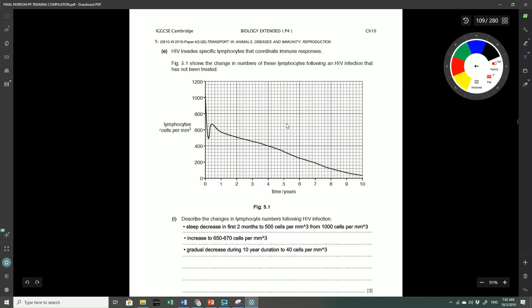All we're going to do is describe each of these with the relevant quotes from the graph. There's a steep decrease in the first two months from 1,000 cells per millimetre cubed to around 500 cells per millimetre cubed, and that happens over the period of two months. Then you can say that there is an increase from that 500 cells per millimetre cubed to around 650 to 670 cells per millimetre cubed. And then there is a gradual decline during the 10 year duration to an end point of around 40 cells per millimetre cubed.